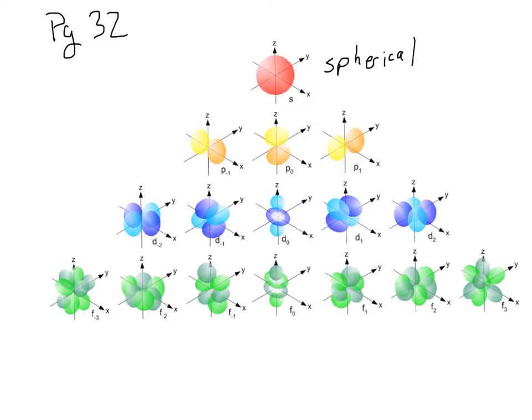So the second type of sublevel we come to is the P sublevel. This one is somewhat known as the dumbbell shape or it kind of looks like an infinity sign to me. But this would be the second highest energy level or the second lowest energy level. This is found, and we'll talk about this later on the periodic table where to find these. So right now you should just know that there are three different P sublevels.